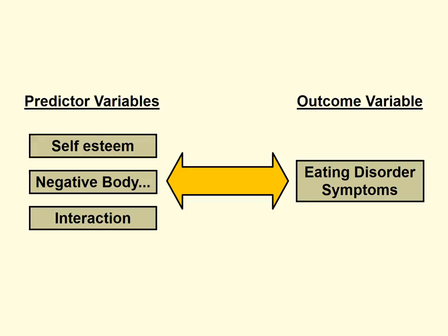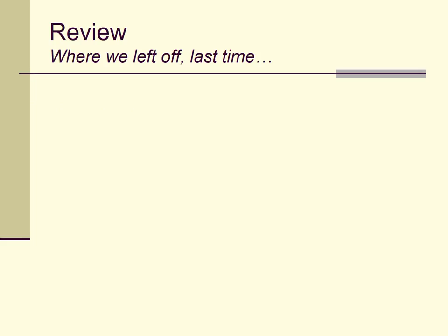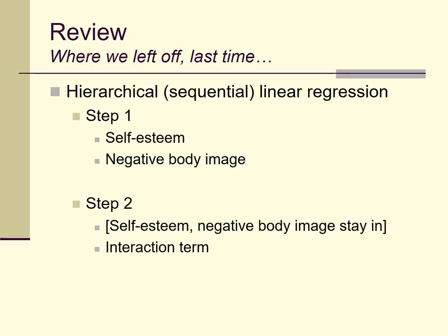We want to represent these variables pictographically — here are our predictor variables and here's our outcome variable, showing the relationship between these sets of variables. Last time I presented this as an example using hierarchical multiple regression, or sequential multiple regression. In step one, we enter our main predictors — self-esteem and negative body image. In step two, those stay in the model and the interaction term enters, allowing us to test whether the interaction significantly improves the fit of the model to the data — essentially allowing a flat plane to warp in space.